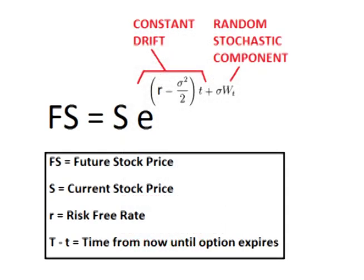Brownian Motion assumes that there are two parts to random movement. The first is an overall constant driving force called the drift. The second is a random component. Therefore, the rate that the asset increases each day — the U value that E is raised to — can be broken down into two parts: an overall drift and a random stochastic component.